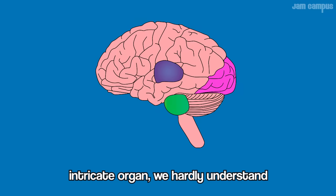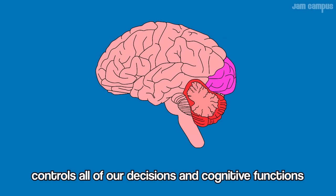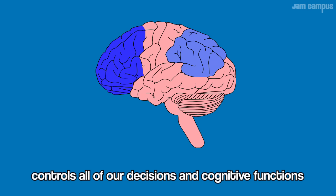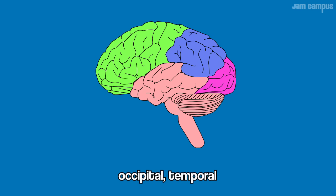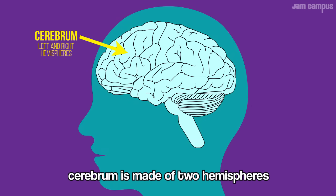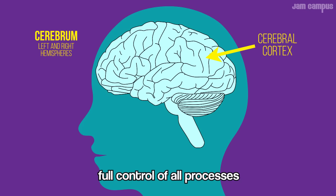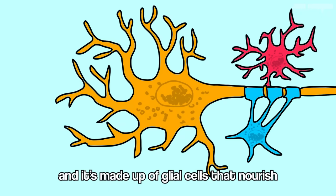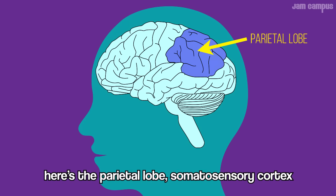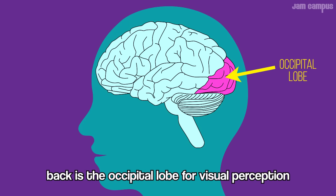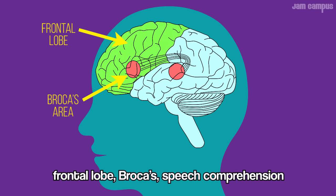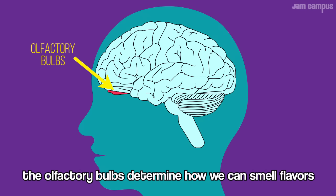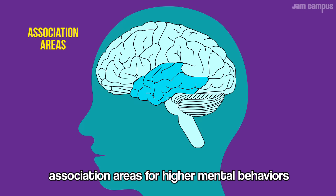The brain is an intricate organ we hardly understand. It controls all our decisions and cognitive functions. It's got four lobes: frontal, parietal, occipital, and temporal — all different parts controlled. The cerebrum is made of two hemispheres. The outer cerebral cortex is a full-control neuron layer, made up of cells that nourish, support, and protect our neurons. The parietal somatosensory cortex, the occipital lobe for visual perception, the temporal lobe for written language, and the frontal lobe for speech comprehension.